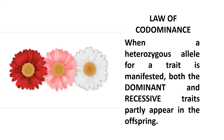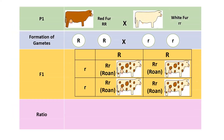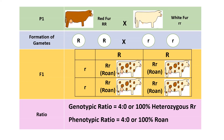Are you familiar with the roan fur of cattle? Roan is a color where both red and white appear as the fur color of cattle. In this table, we can see that the genotype of roan fur is heterozygous, as stated by the law of codominance. The genotypic ratio is equal to 4:0, or 100% heterozygous (uppercase R and lowercase r). And the phenotypic ratio is 4:0, or 100% roan fur.